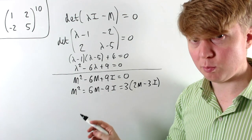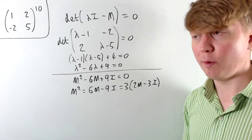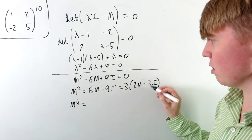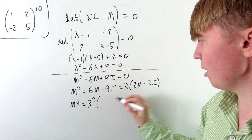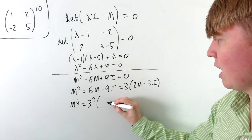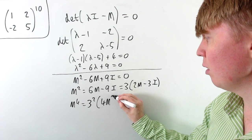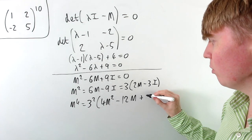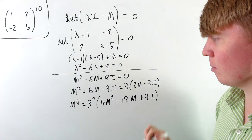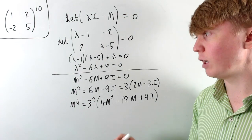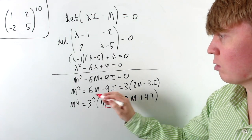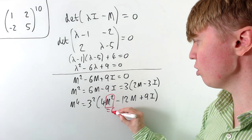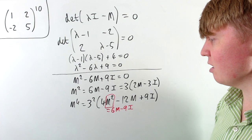This helps us express large powers of M in a simpler form. Starting with M to the power of 4, we square our expression: we have 3 squared times (2M minus 3I) all squared, which gives us 4M squared minus 12M plus 9 times the identity matrix — noting that M times the identity gives us M. Using Cayley-Hamilton, we know M squared equals 6M minus 9I, so we substitute that in.